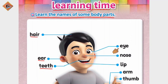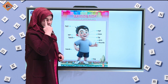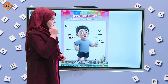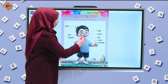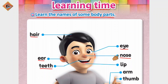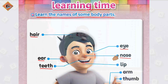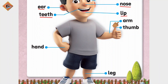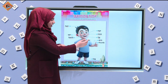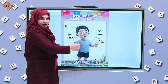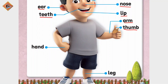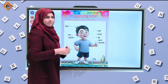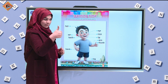Now see the other side. Eye — this is my eye. Nose — this is my nose. Lip — lip. Arm — this is my arm. Thumb — this is my thumb.